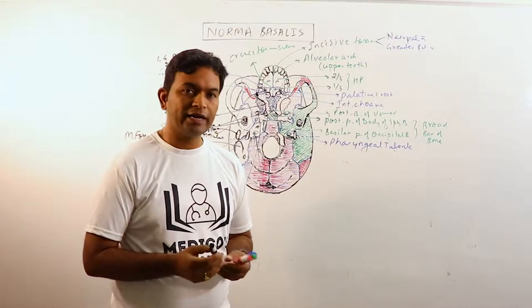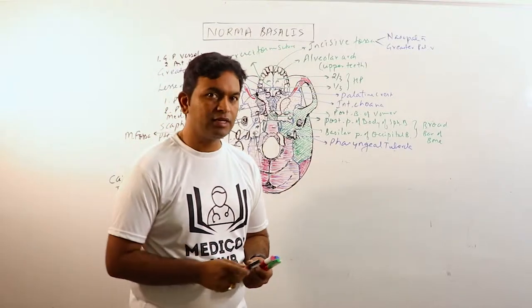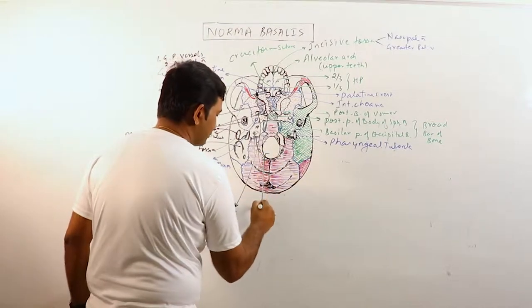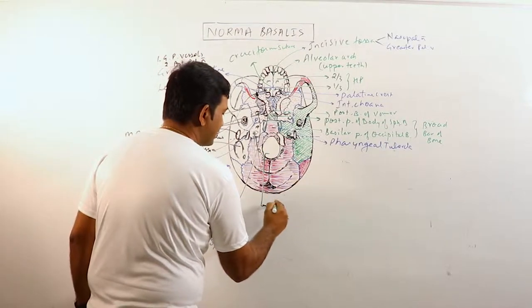We are going to discuss it in two headings: one is median area and another one is lateral area. The median area is basically contributed by foramen magnum.